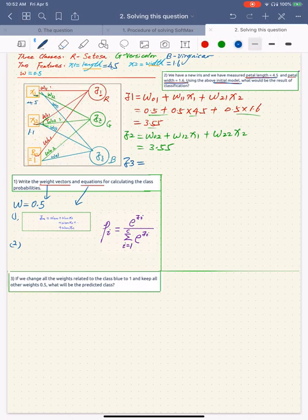And then the blue guy, it says z3, start from W03, and then W13 times x1, W23 times x2. So same, 3.55, because all the values here same as z1.